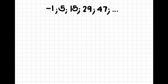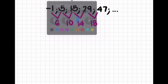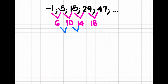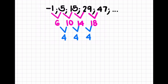The next sequence is: minus 1, 5, 15, 29, 47. I'm going to go quicker through these ones. First difference: 5 minus minus 1 equals 6; 15 minus 5 equals 10; 29 minus 15 equals 14; 47 minus 29 equals 18. That's not a constant first difference. Second difference: 10 minus 6 is 4; 14 minus 10 is 4; 18 minus 14 is also 4. So we have a constant second difference — we're working with a quadratic number sequence.